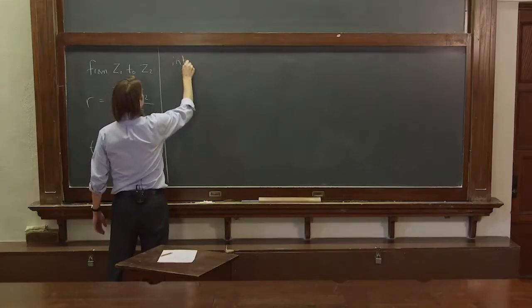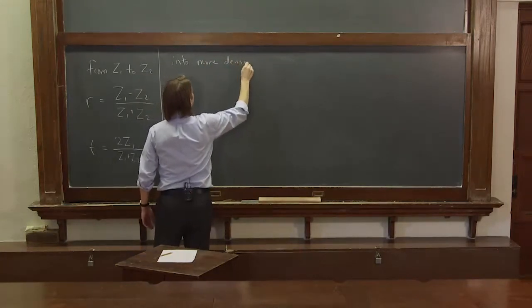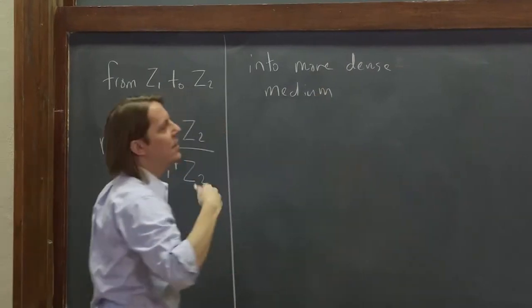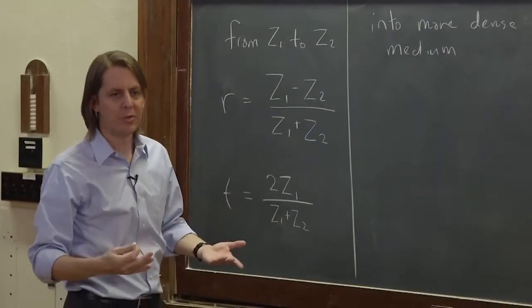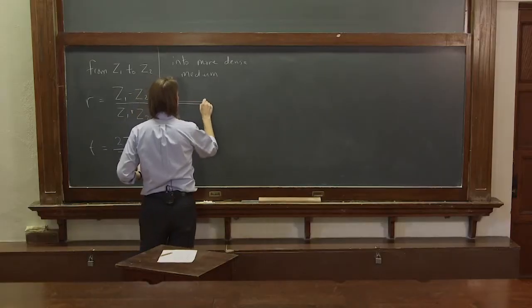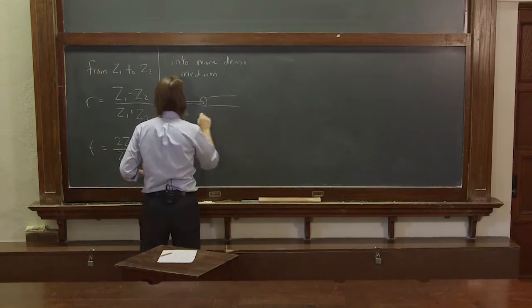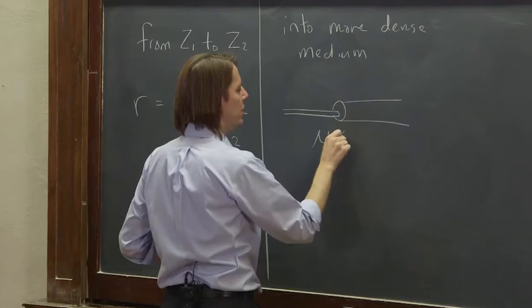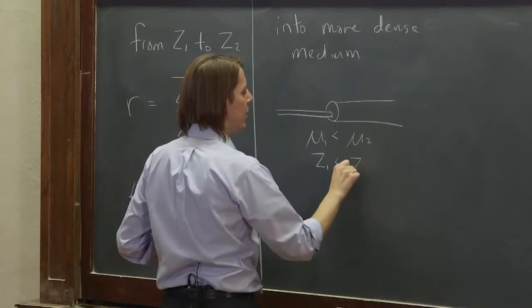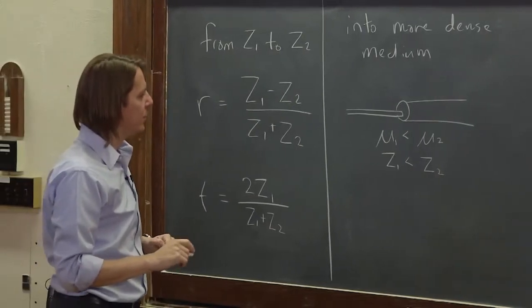Let's imagine the case of going into a more dense medium. So in any wave medium, more dense usually means higher impedance. In the case of the string, it means we have a nice thin string here going to a thicker string where mu1 is less than mu2, and therefore the impedance of 1 is less than the impedance of 2.